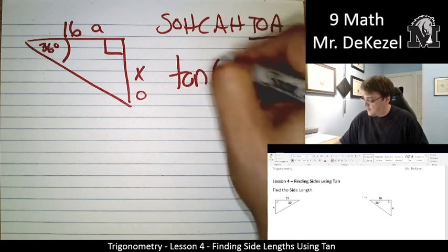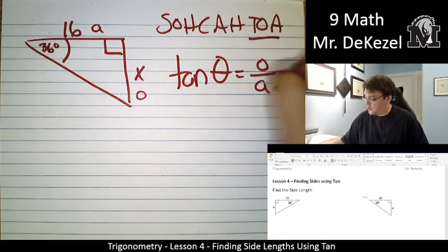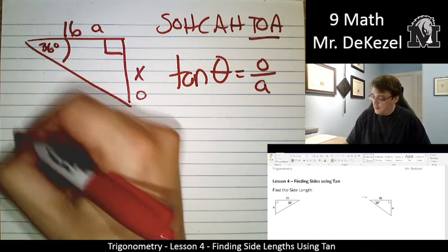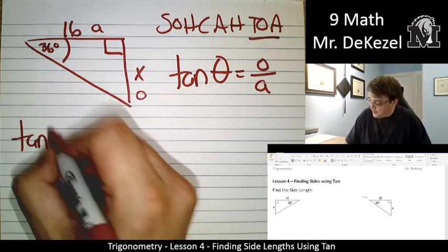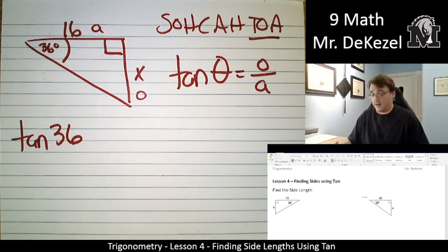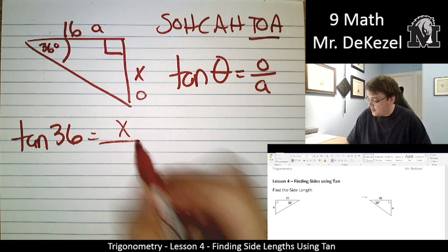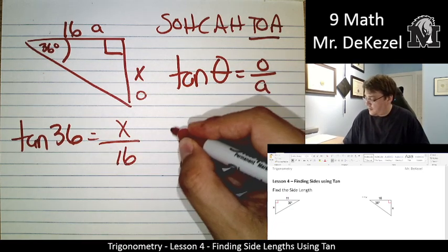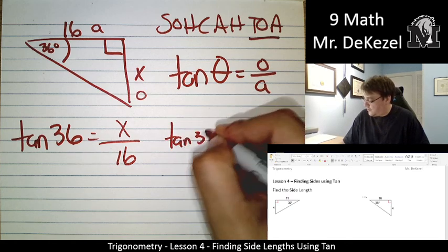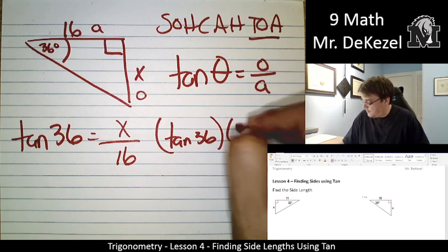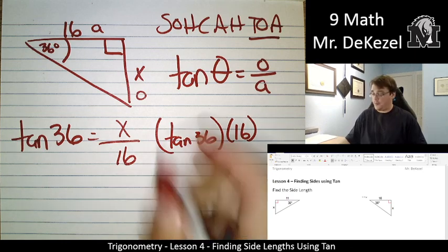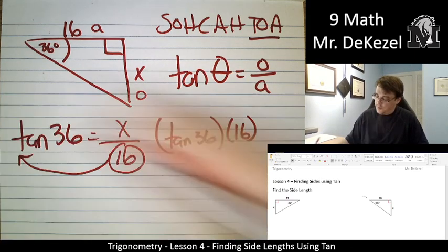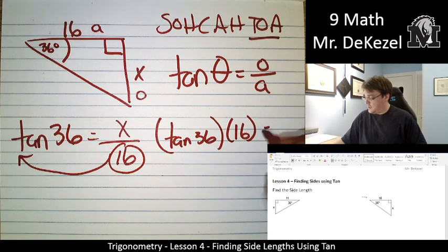So tan of theta is equal to opposite over adjacent. Tan of 36, that is our angle, is equal to X, our unknown, over 16, our adjacent side. So, that would be tan of 36 multiplied by 16. We move it up from the bottom. It's equal to X.